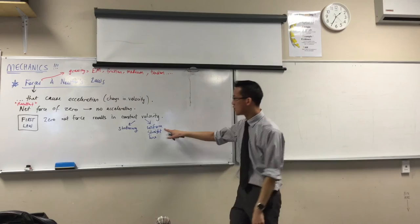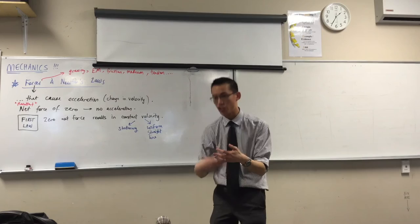So, that's not a constant velocity. The speed might not be changing, but the direction is changing all the time. Now, why is that? What is making its direction, and therefore its velocity, constantly change?